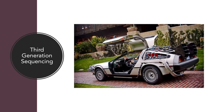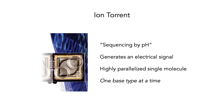We can now move on to third generation sequencing, which is really where things are going, particularly into the future. One such technology is Ion Torrent. This isn't actually used very much anymore, though it's still in production. I want to talk about it because it's quite a different kind of technology. Ion Torrent is sequencing by pH — it effectively generates an electrical signal, not a light signal. It is highly parallelized, and in this third generation sequencing we're talking about sequencing single DNA molecules — single molecule sequencing. This is one base type at a time, similar to Illumina.